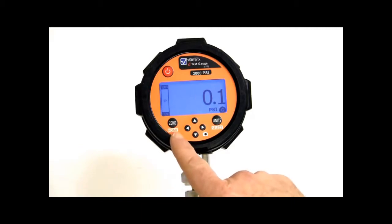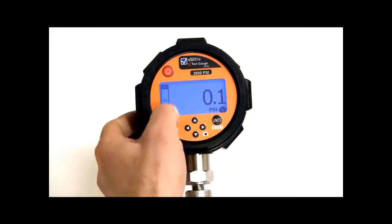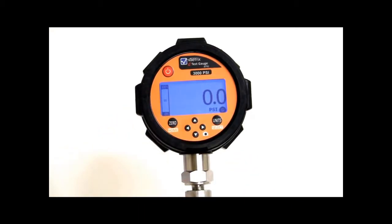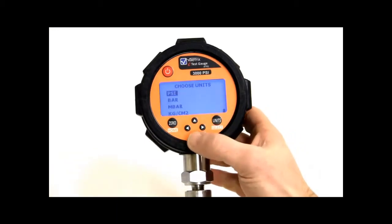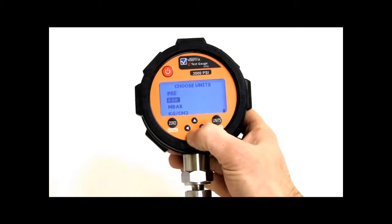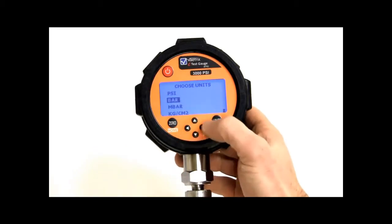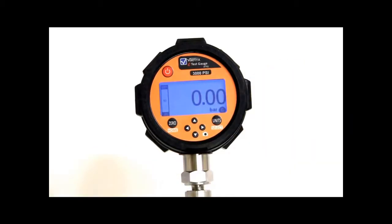So in measure mode you have the ability to zero the unit by hitting the zero key. You can change the units by hitting the units key using the arrows to navigate where you want. So select bar, hit select and you change the bar.